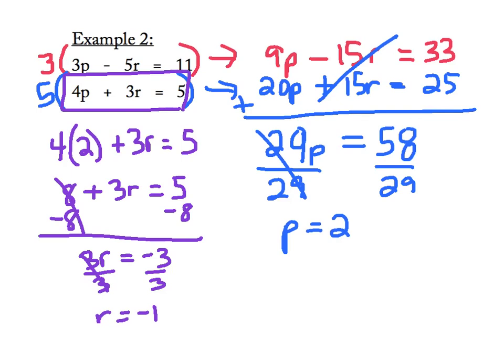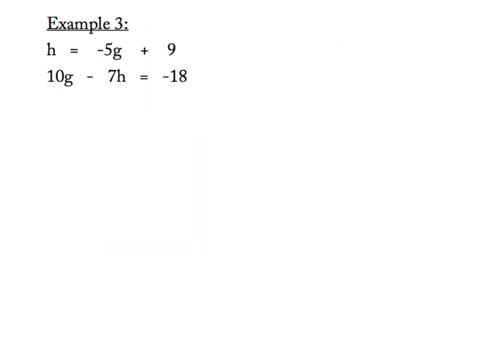Now, I need to write my answer as an ordered pair, and I need to remember to put them in alphabetical order. P comes before R in the alphabet, so my solution is going to be 2, negative 1. Here we go with example 3.